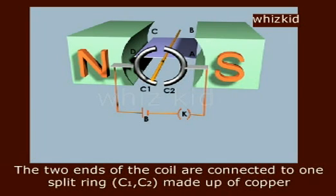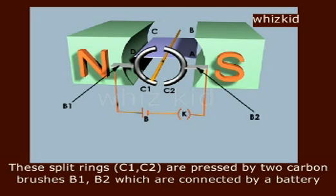The two ends of the coil are connected to split rings C1 and C2 made of copper. These split rings C1 and C2 are pressed by two carbon brushes B1 and B2 which are connected to a battery.